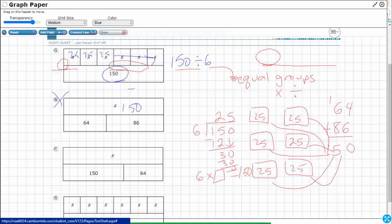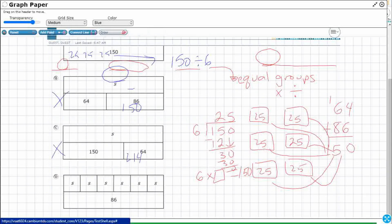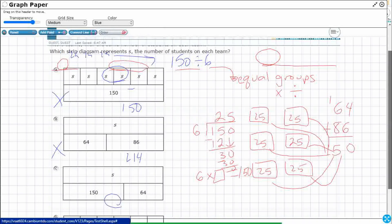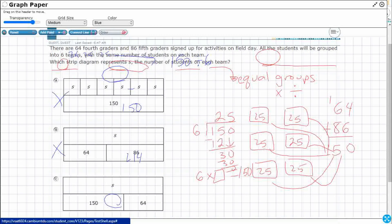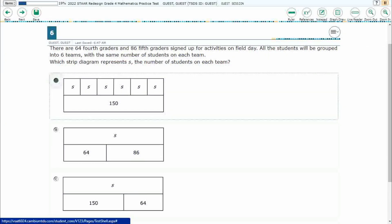It's 150 and 64. Now we're at 214. There's not 214 kids per team. And D has got six groups, but it's only got the 86, which is just one of these sets. 86 is just the fifth graders, not the fourth graders. So the one that makes the most sense for us here is A.